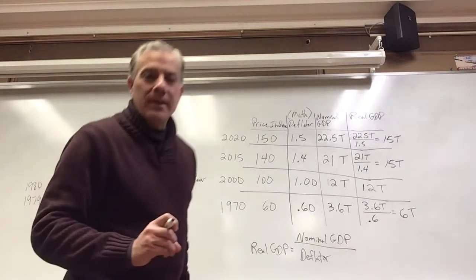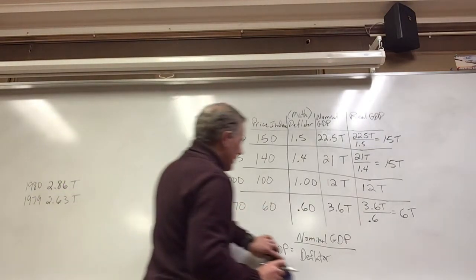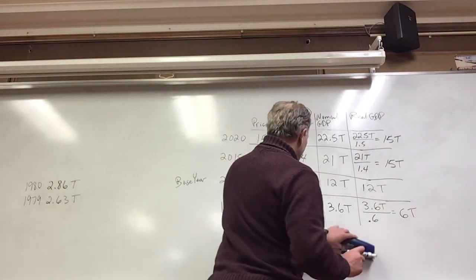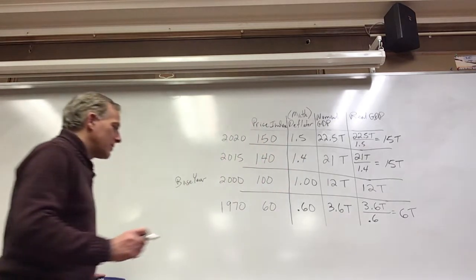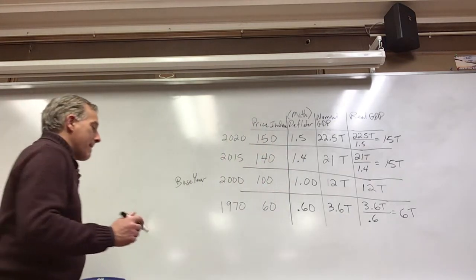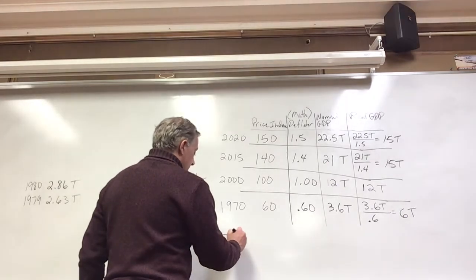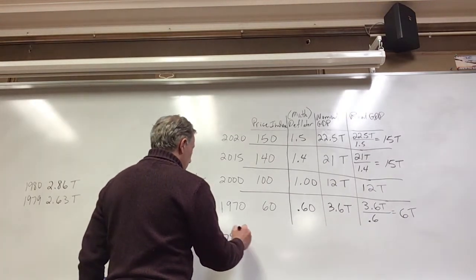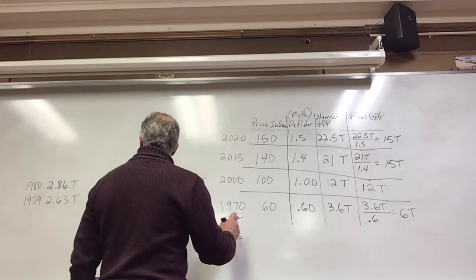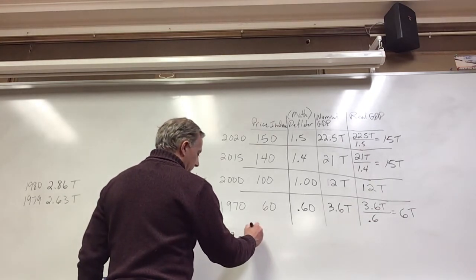Before we close it up here, I want to talk about 1979, 1980, and these are, for the most part, actual numbers. 1979, the nominal GDP was 2.63.